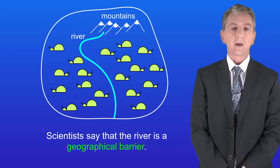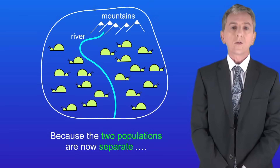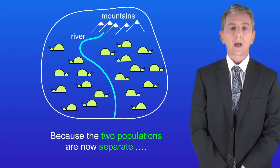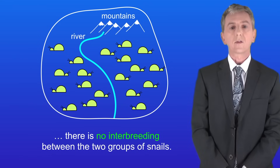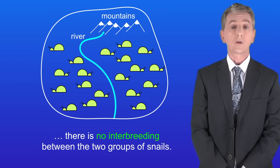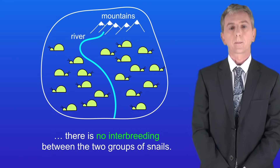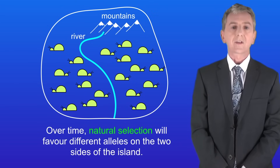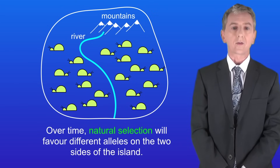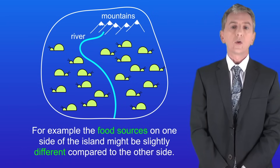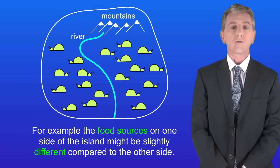Scientists say that the river is a geographical barrier. Because the two populations are now separate, there's no interbreeding between the two groups of snails. Over time, natural selection will favour different alleles on the two sides of the island. For example, the food sources on one side of the island might be slightly different compared to the other side.